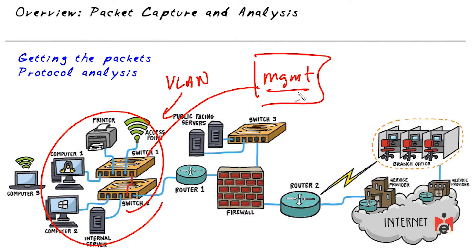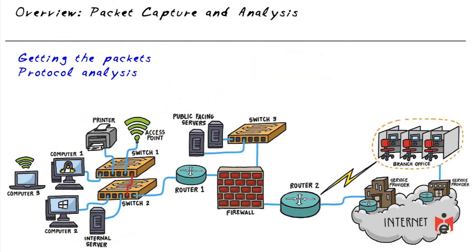Another possibility is tapping into an existing network. With a network tap in place, we get copies of all data over a connection — say from router to switch port — and can analyze it either at the tap device or by copying the capture to another location. Once we have the packets, we use a protocol analyzer to dig deep into the details to see exactly what's going on.